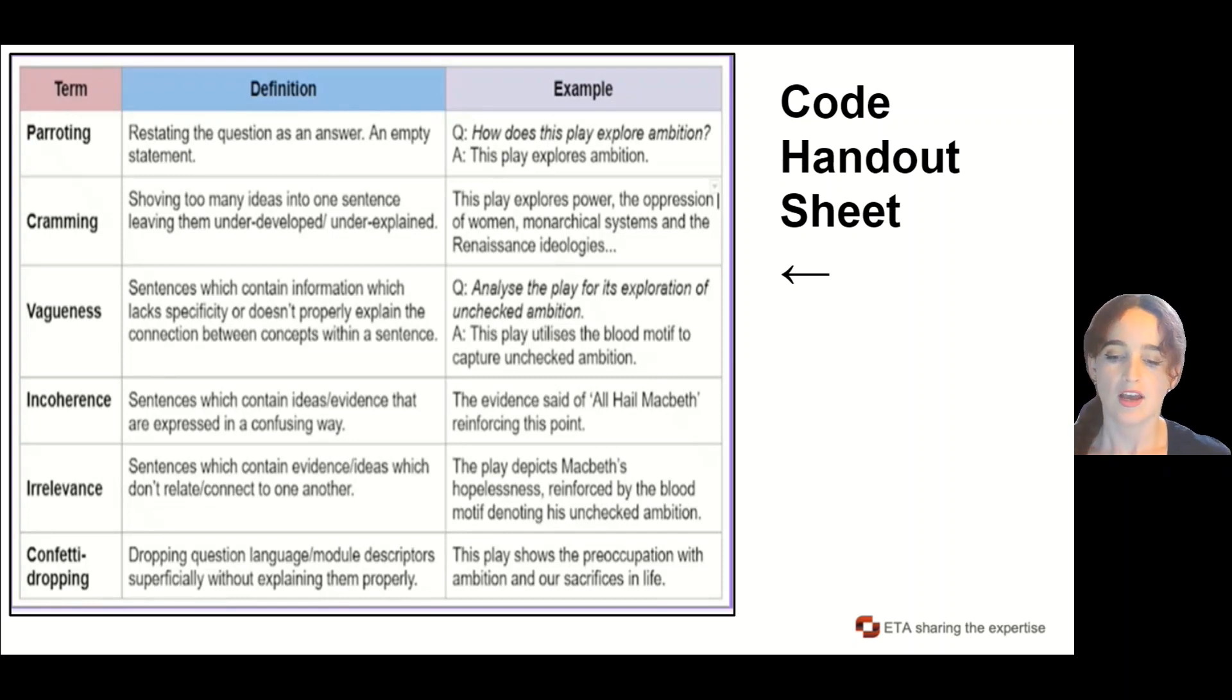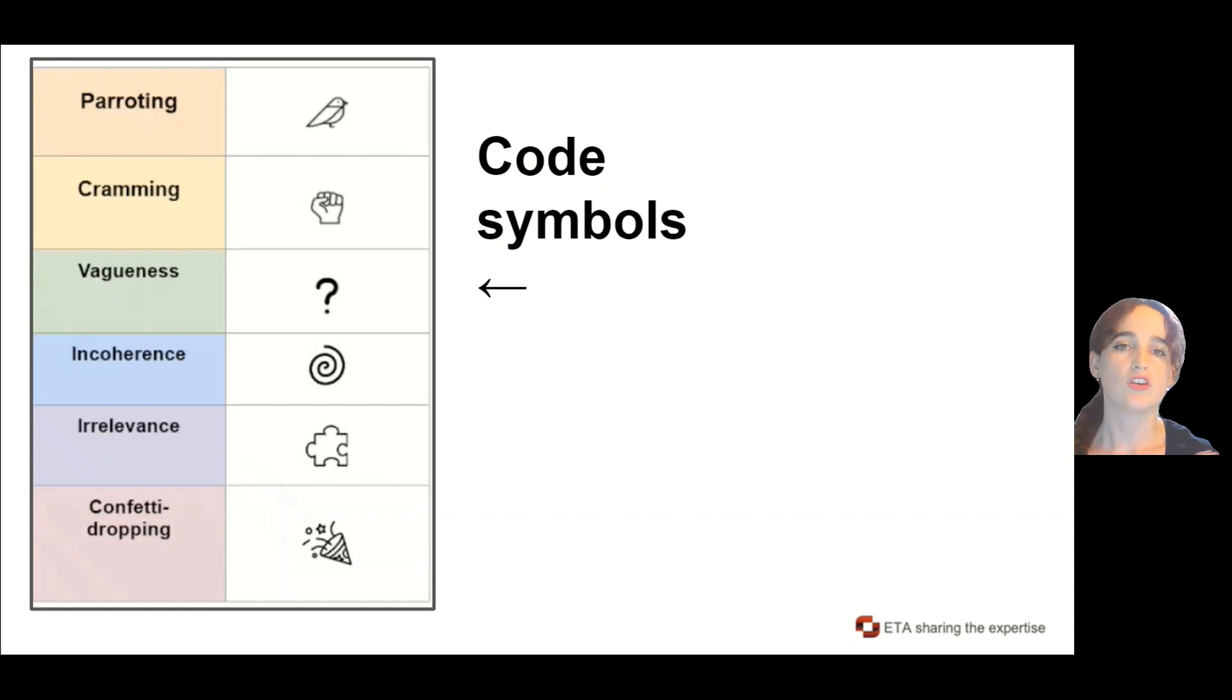As we can see with the code symbols, for each of the outlined expression issues there is a visual icon that is representative of that expression issue. As we can see, parrot is a little bird.